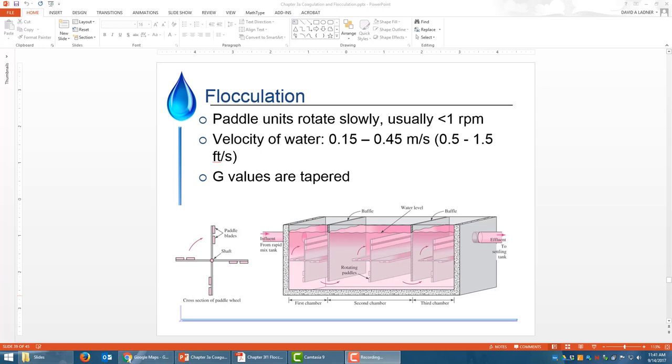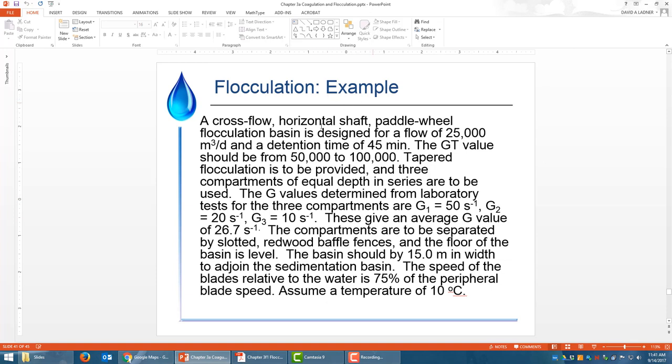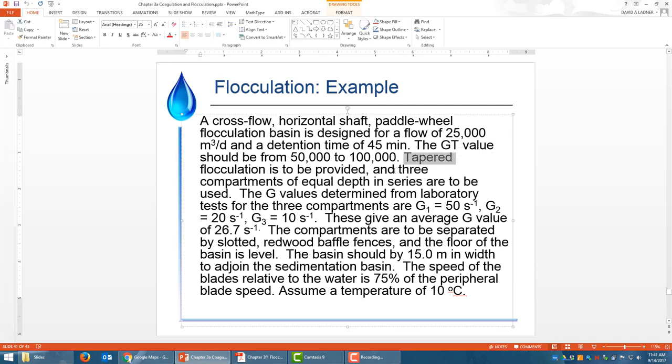This example is all about flocculation. We're going to design something that looks like this picture here. We're looking at the Chapter 3A Coagulation and Flocculation PowerPoint slides. This is really where the example problem is defined: a cross-flow horizontal shaft paddle wheel flocculation basin. The flows are given, the GT values are given to us. So let's dive in.